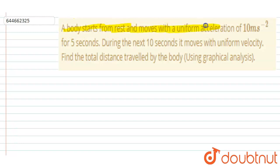A body starts from rest and moves with a uniform acceleration of 10 meter per second squared for 5 seconds. During the next 10 seconds it moves with constant uniform velocity. Find the total distance traveled by the body. So after 5 seconds you can calculate its velocity.